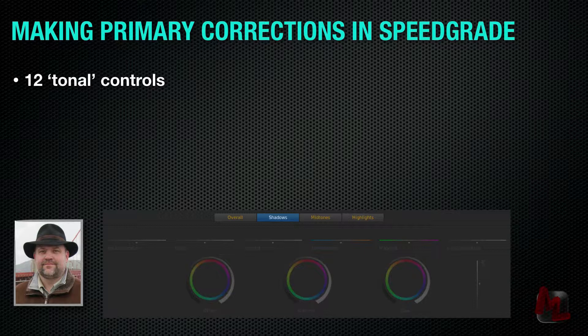The thing to understand about SpeedGrade is it's a little bit different than other apps. You'll notice we're not seeing any curves manipulations here, not seeing a lot of other kinds of manipulations you might see in other apps, and that would cause some people to think it's kind of a simple tool. While it's certainly a simple interface, it has a tremendous amount of power. Typically, as you take a look at this, we've got offset, gamma, and gain — in other apps that might be shadow, mid-tone, highlight — and you're looking at that saying, really, this is it? I've got three controls?